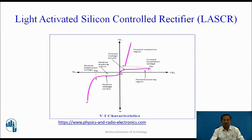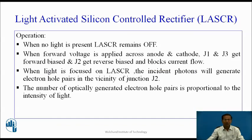This is the VI characteristics of LASCR. This is the forward breakdown voltage. The forward breakdown voltage depends upon the light intensity. If light intensity is more, forward breakdown voltage is less, and if light intensity is less, forward breakdown voltage is more. When no light is present, LASCR remains off. When forward voltage is applied across anode and cathode, J1 and J3 get forward biased and J2 gets reverse biased and blocks current flow.